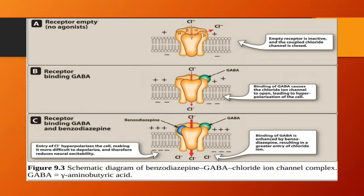Figure C shows what happens when benzodiazepines bind to their receptor, the GABA-A receptor, in the presence of endogenous GABA. Benzodiazepines have zero efficacy in the absence of endogenous GABA — they require the presence of endogenous GABA to produce their effects. They basically enhance, potentiate, augment the effects of endogenous GABA, or facilitate GABAergic transmission. By potentiating GABAergic responses, they increase the frequency of chloride ion channel opening, thereby causing hyperpolarization and reducing neuronal excitability.